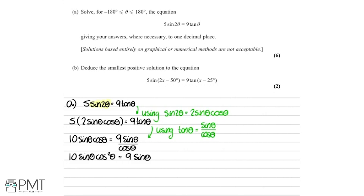The temptation here is to see we've got sinθ on both sides and divide through by sinθ to cancel it. However, we can't do that — we have to be really careful because we can't divide by zero, and sinθ could be zero. Dividing through by it would cause us to lose solutions, so we must not do that.